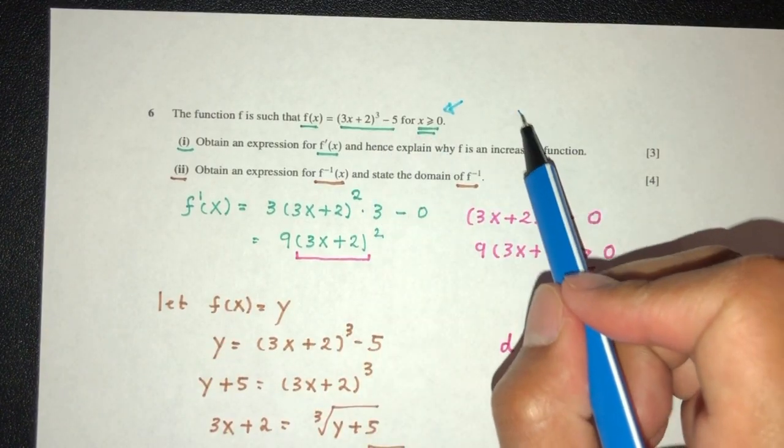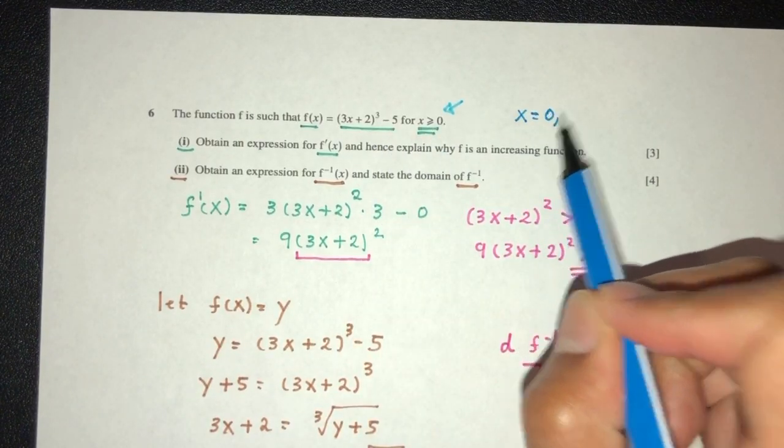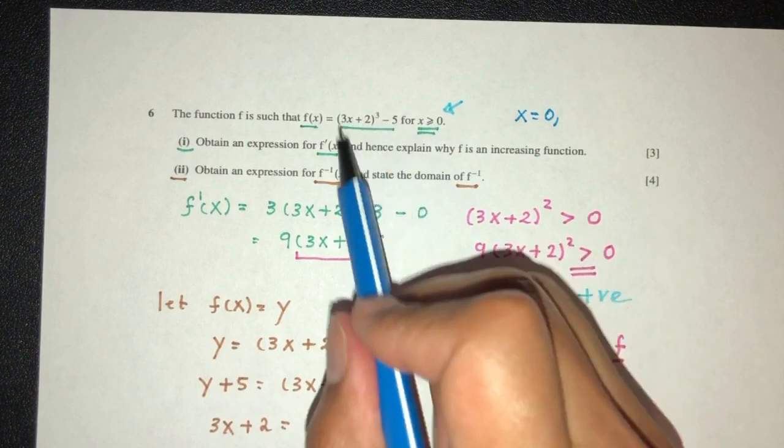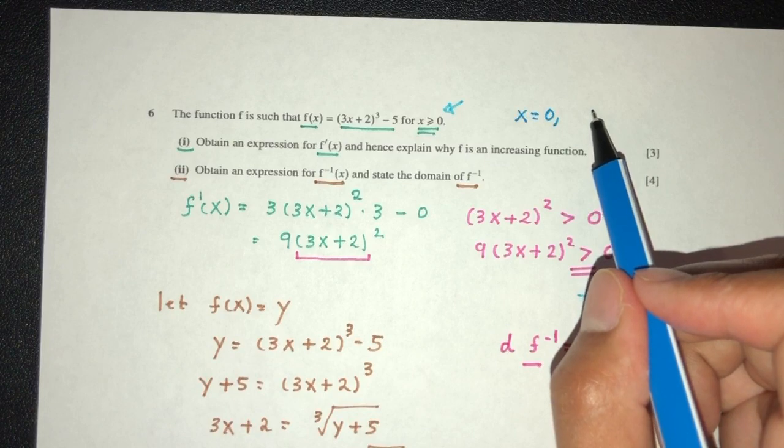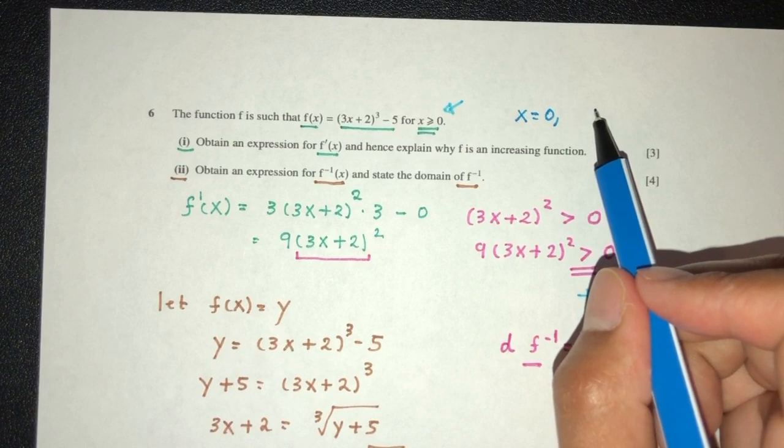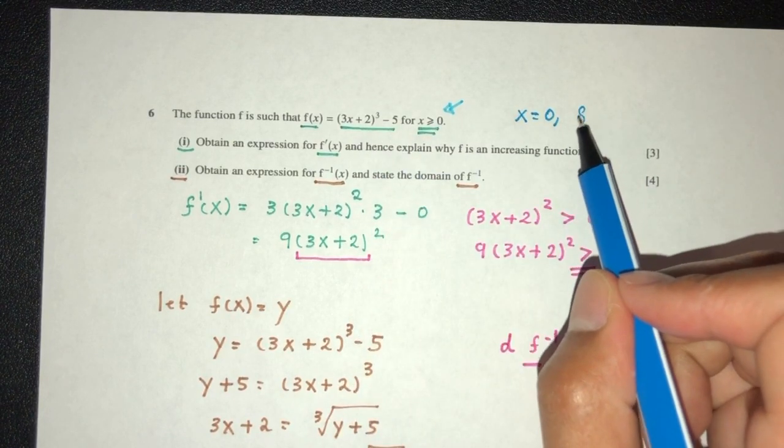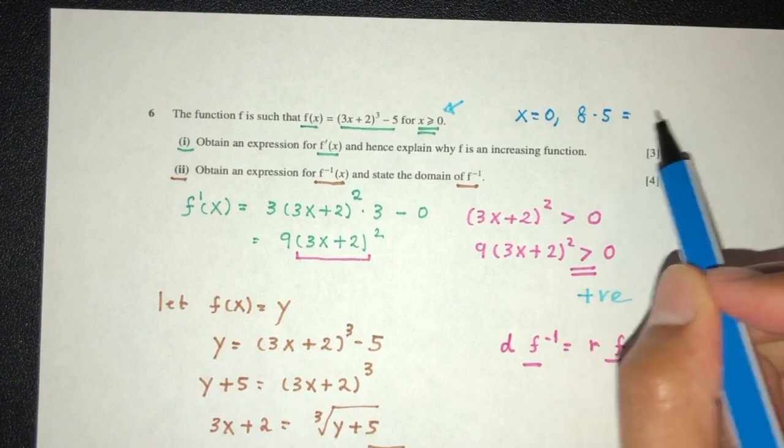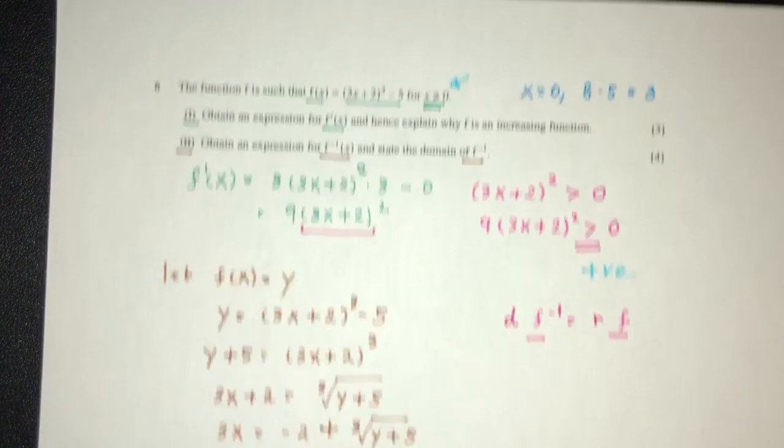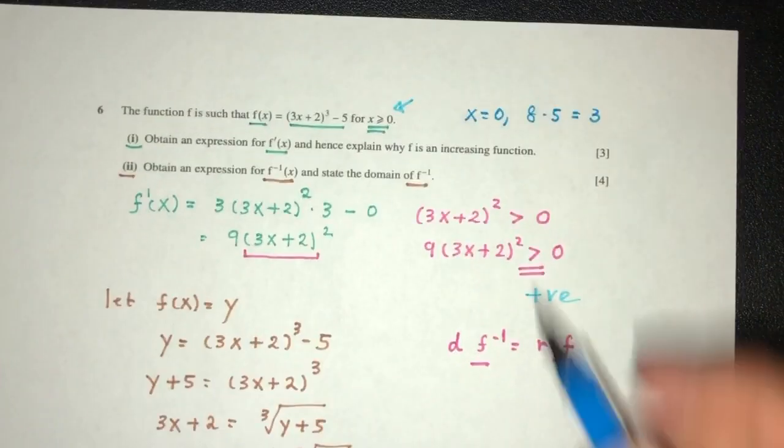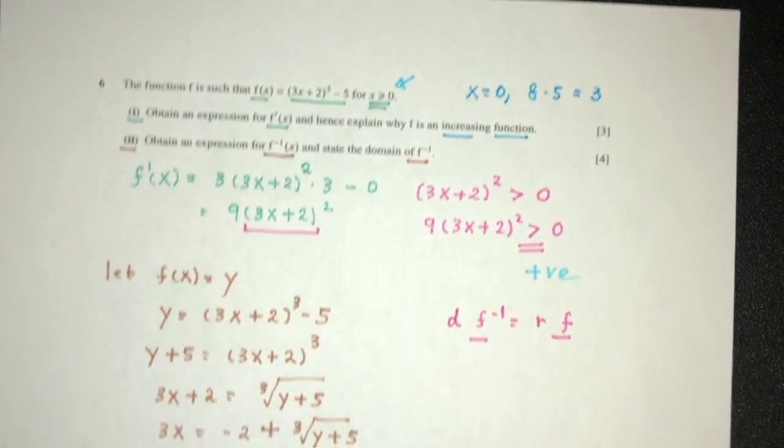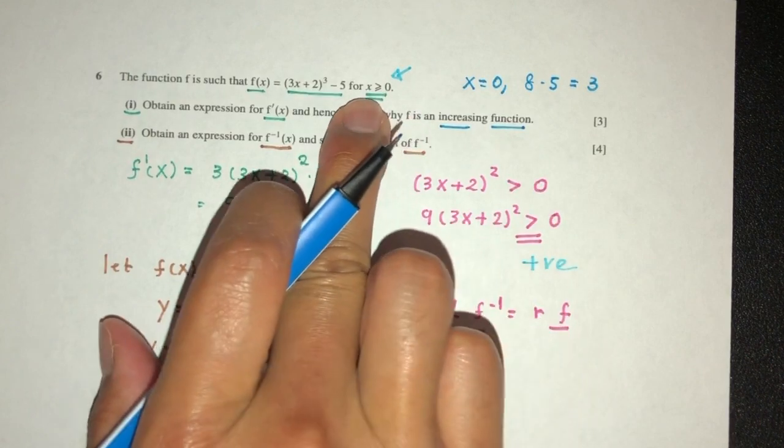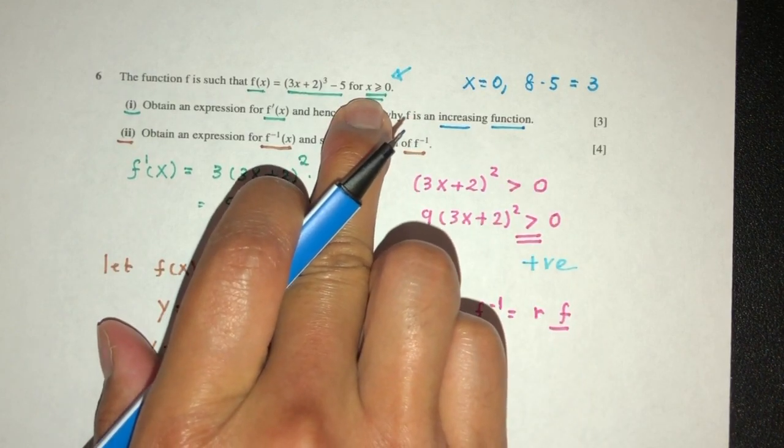For the values of x equal to 0, what is that going to be? That is going to be 3 times 0 is 0 plus 2, that will be 2, 2 power 3 will be 8, 8 minus 5, that should be the value of 3. So as you can see, the graph, since the graph will always be going up, increasing function always going up, the minimum point defined by the x value here is 3.